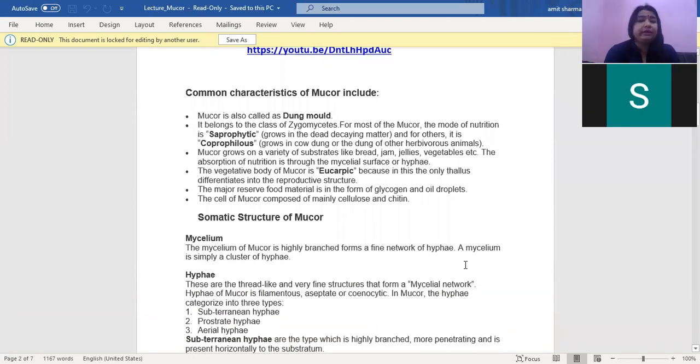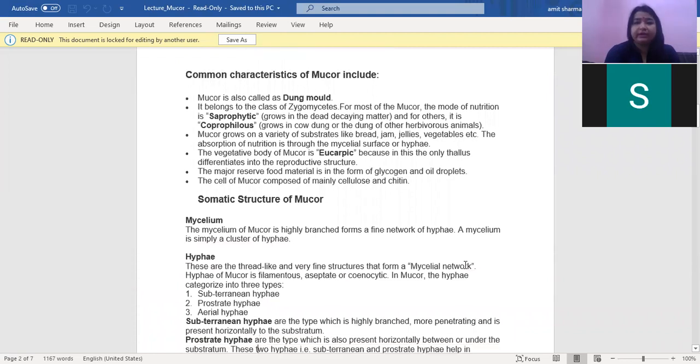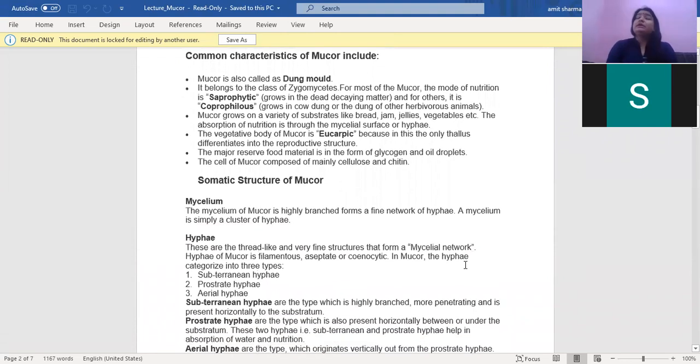The vegetative part of MUCR is eucarpic, because in MUCR, the thallus only differentiates into the reproductive structure. When the thallus forms the reproductive structure, such type of thallus is called eucarpic. The main reserve food material is glycogen and oil droplets, and the cell of MUCR is mainly composed of cellulose and chitin.